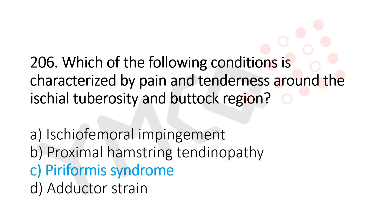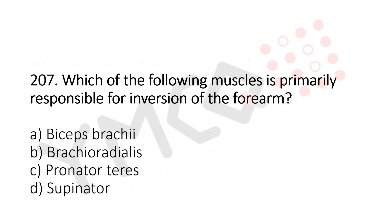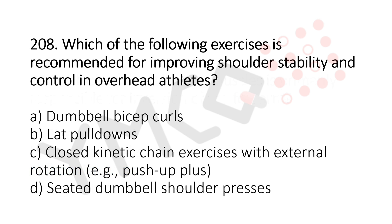Question 207: Which of the following muscles is primarily responsible for inversion of the forearm? Option A: biceps brachii. Option B: brachioradialis. Option C: pronator teres. Option D: supinator. The answer is option C, pronator teres.